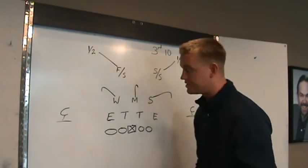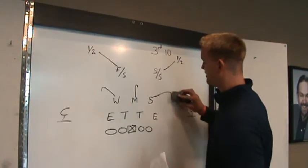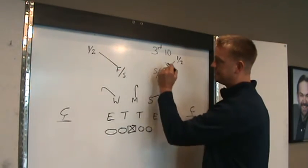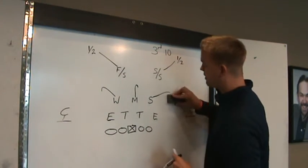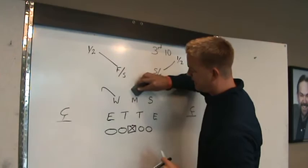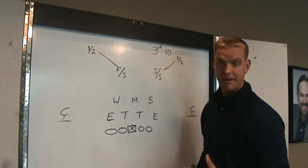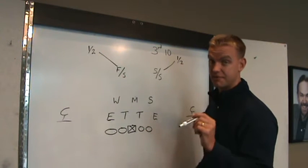So whenever you hear cover two, think of two deep, five under. Now as you can see here, what becomes most vulnerable in a cover two is the middle of the field and that's where the brainchild of Monty Kiffin, Tony Dungy and others, while they were in Tampa Bay, really with the Minnesota Vikings before Tampa, with Pete Carroll as a coach as well.